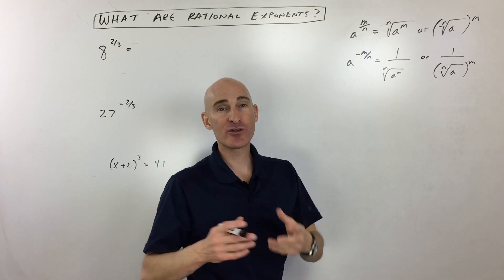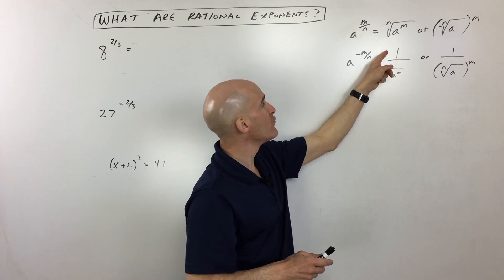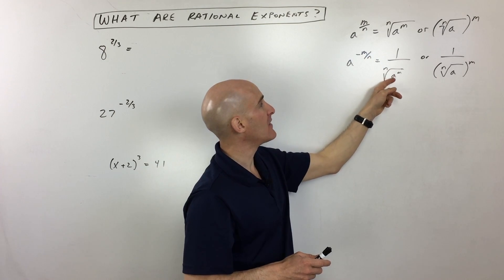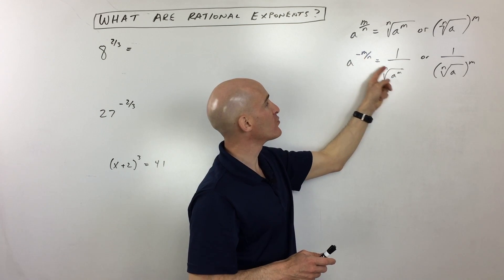Now, if you have a negative exponent thrown in there, you want to remember negative exponents take the reciprocal, or you can think of moving it to the other side of the fraction bar and then making it a positive exponent. So the negative flips it. But again, the denominator is the root, and the numerator is the power.